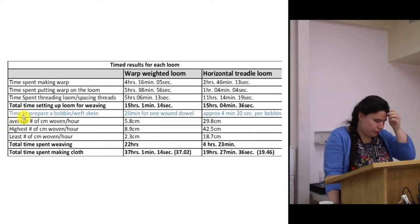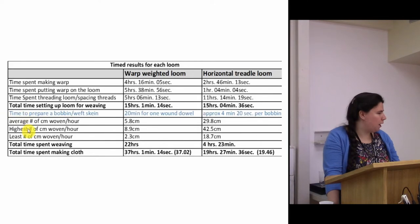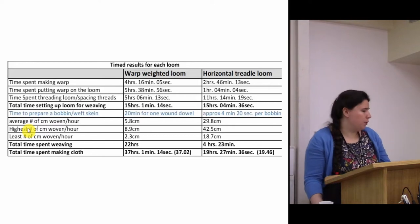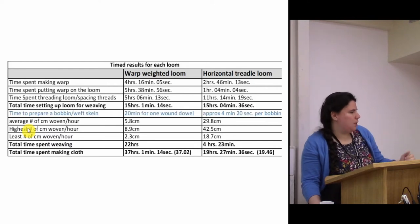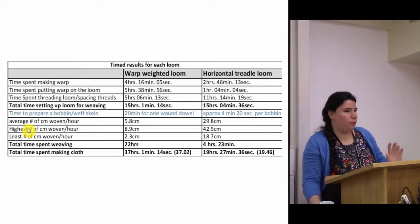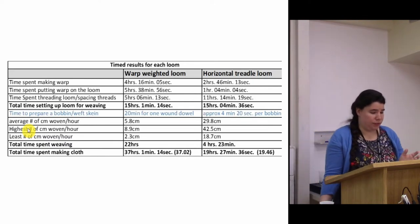The first important thing to note is that the warp-weighted loom did indeed take a longer time to produce cloth than the horizontal treadle loom, as expected. The horizontal treadle loom at the weaving stage could produce cloth between five to seven times faster than the warp-weighted loom, depending on how you calculated these differences.